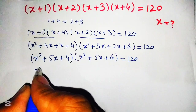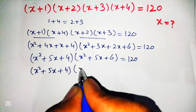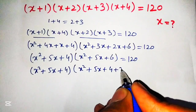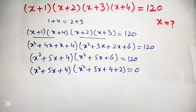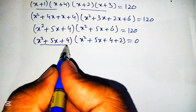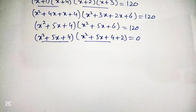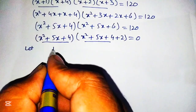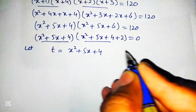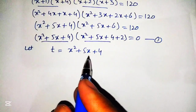We can rewrite this as x² plus 5x plus 4, into x² plus 5x plus 4 plus 2, equal to 120. We can see there is symmetry: both expressions contain x² plus 5x plus 4. So we let t equal x² plus 5x plus 4, and call this equation number 1.